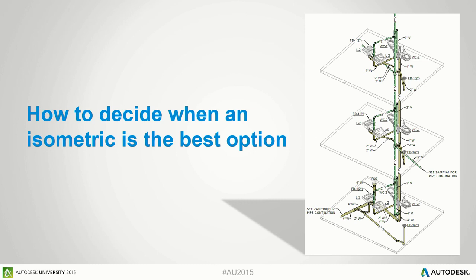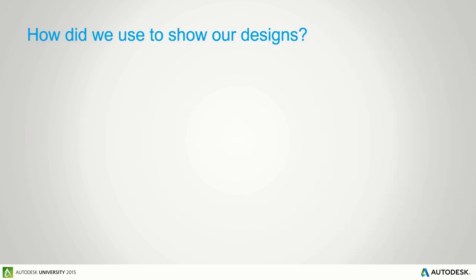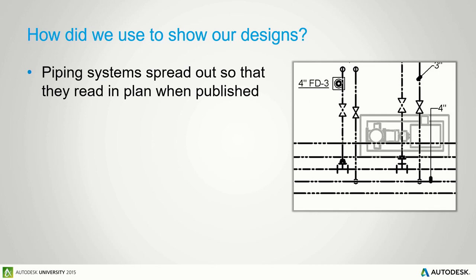For people transitioning from CAD to Revit, there's a common issue: they intuitively want to keep drawing in Revit the way they drew in CAD. For example, they'll lay out piping systems with pipes spaced eight inches apart so tags don't overlay and they don't have to deal with that, which doesn't work in practice.